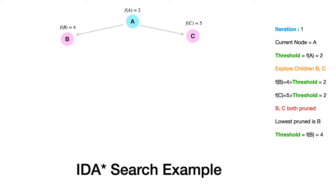Let's see with an example how IDA* works. Consider starting node A with F(A) = 2, and two children B and C with F(B) = 4 and F(C) = 5. We use F(n) as the threshold to decide whether to pursue further deeper. We start with the threshold equal to 2, which is the F value of the root node.